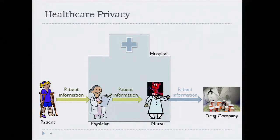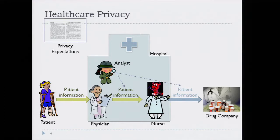One thing I want to point out is that the threats here are from authorized insiders — individuals in organizations who have a legitimate reason to have access to personal information but might abuse that right to use that information in ways that do not respect privacy expectations. So we do not expect traditional security measures like preventive access control to be sufficient to guard against these threats. Access control measures are necessary to keep outsiders out, but that's not going to be sufficient.